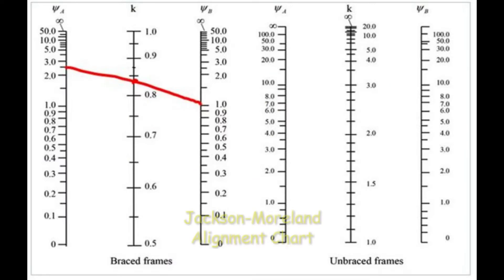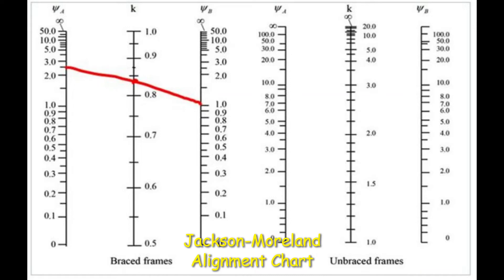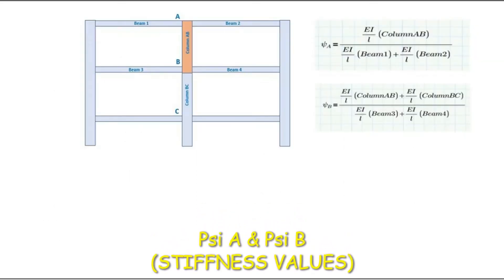The k factor can be taken from the alignment chart. It is the intersection point when a line is drawn to connect the values of psi-A to psi-B. Psi-A and psi-B can be calculated using these formulas, where A and B refer to the endpoints of the column. So if we have this frame and we are after column AB, psi-A can be calculated as the stiffness of column AB divided by the stiffness of beams 1, 2, 3, and 4.